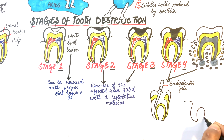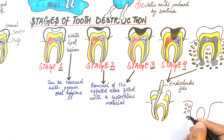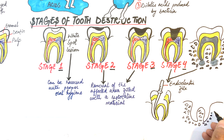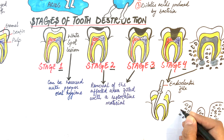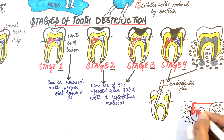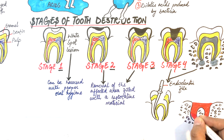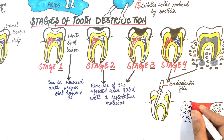Sometimes the tooth may be extracted and then replaced with a crown, bridge, or a dental implant. So it's always much simpler and much more affordable to prevent tooth decay rather than to repair or replace a decayed tooth.